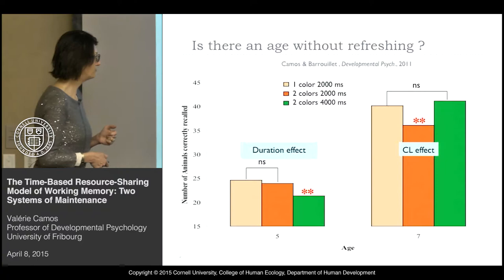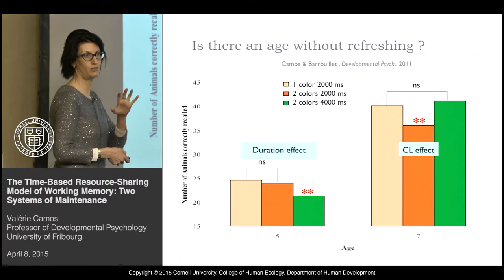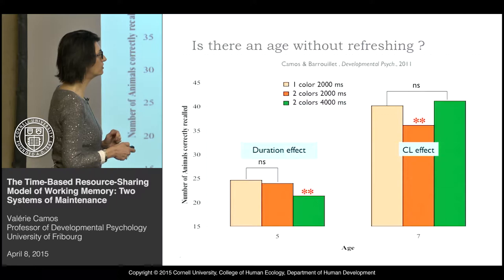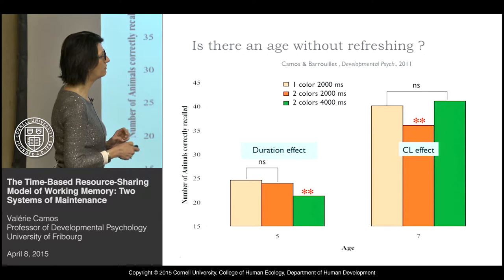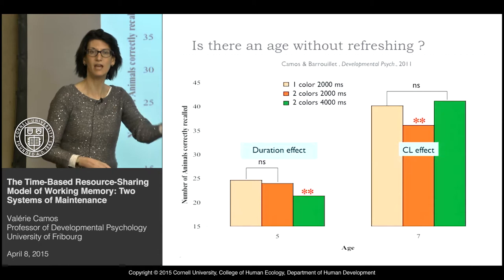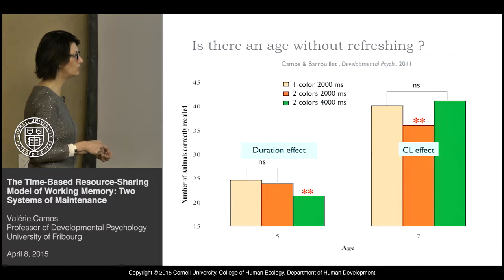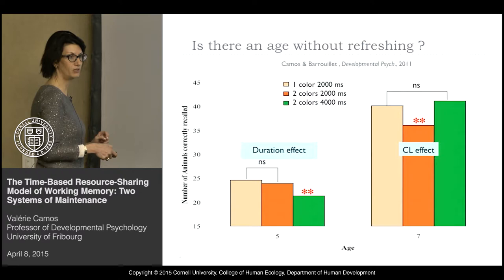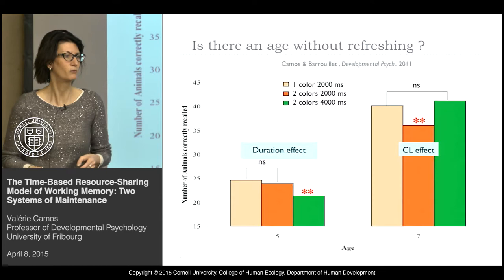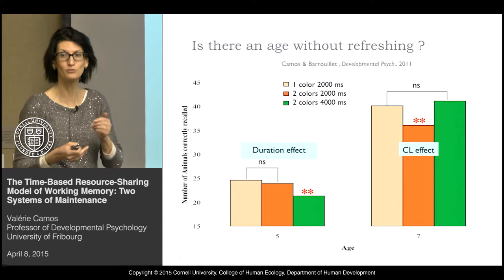Here are the results contrasting 5 and 7 year olds. Of course there is a huge difference in recall performance, but the pattern is really different. At 7, we replicate the cognitive load effect: the two conditions with the same cognitive load did not vary, and children had better recall performance than with higher cognitive load, exactly as the 8-year-olds in the previous experiment. But for the 5-year-olds, it was totally different: the two conditions with the same duration did not vary, and increasing duration reduced performance — as if the children did not use or did not have refreshing.